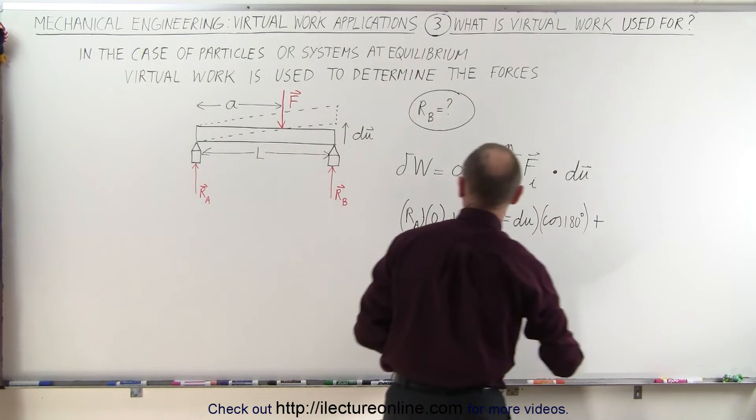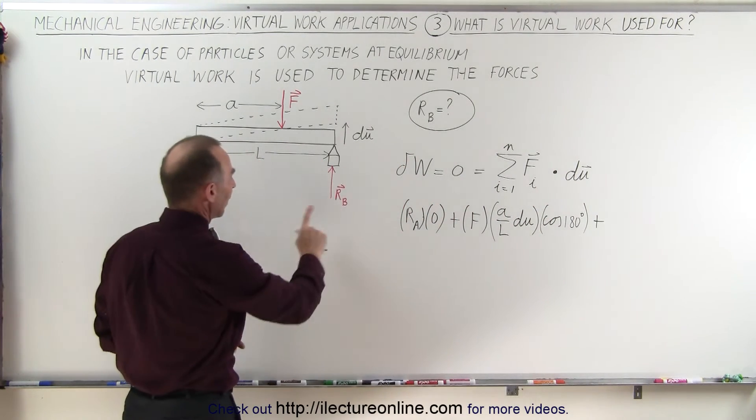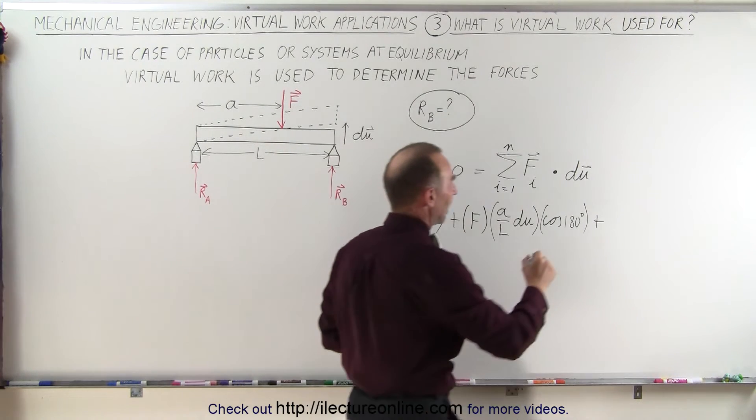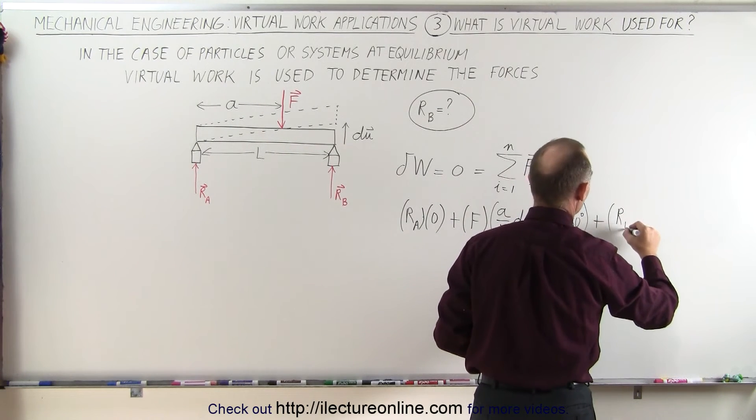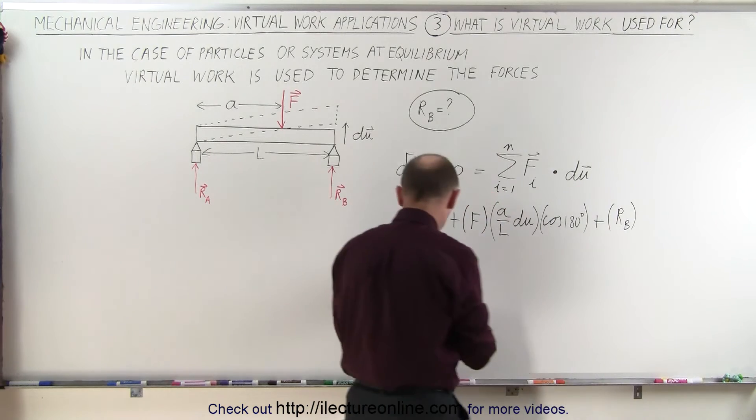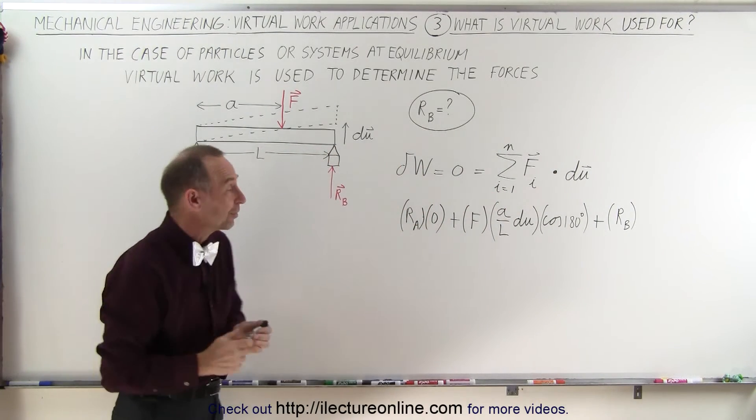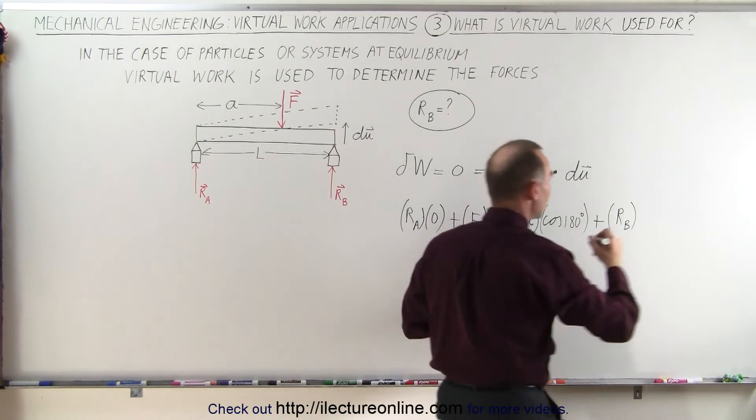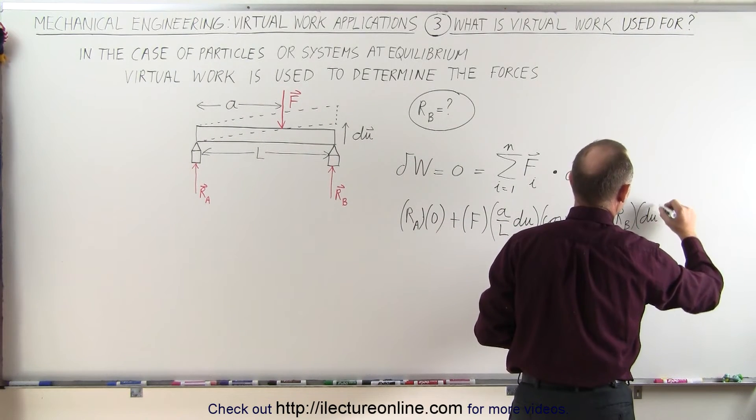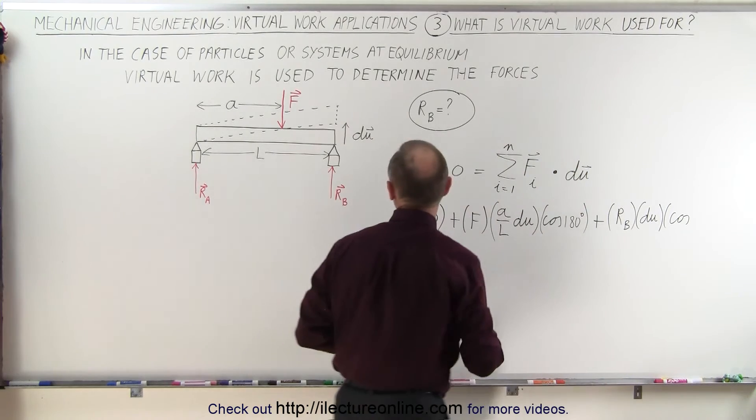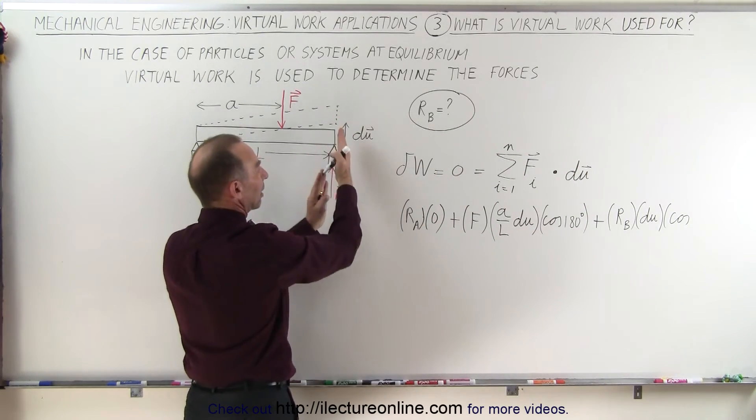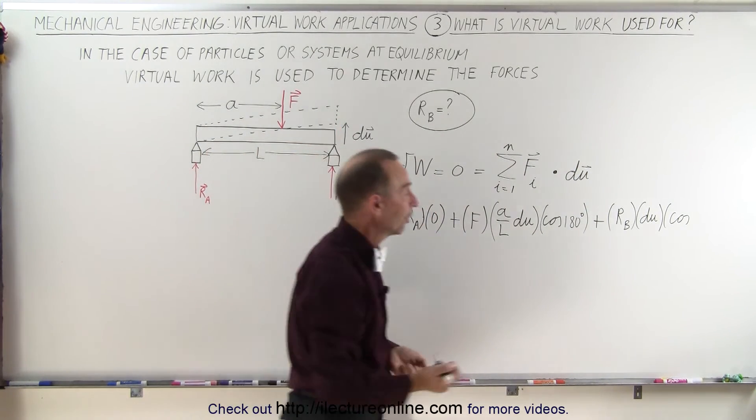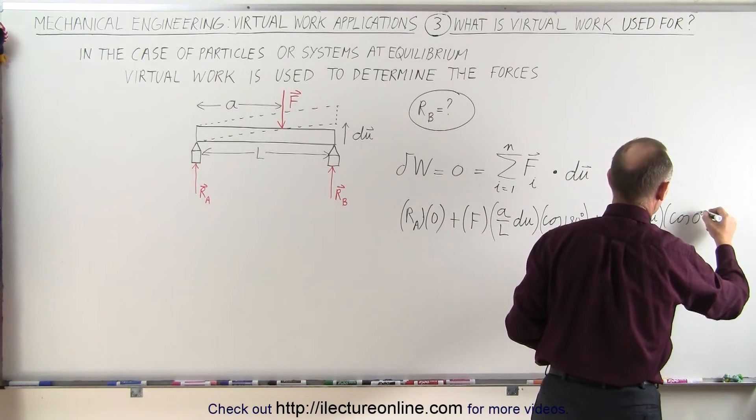Then plus, now we have the reactionary force of B. So we have the magnitude of R sub B times the displacement, again, that imaginary displacement. And in this case, it is indeed du, the whole du, times the cosine of the angle between the two. And notice they're both pointing in the same direction. The angle is zero, so it will be the cosine of zero degrees.